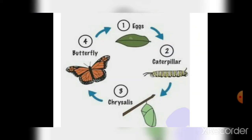The next poem deals with the beautiful butterfly. The four stages in the life cycle of a butterfly are: eggs, caterpillar, chrysalis — the important stage — and butterfly.